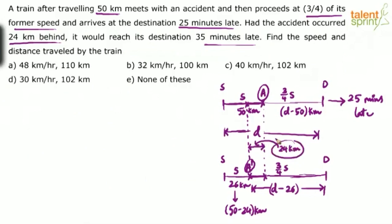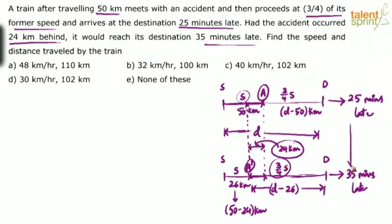In the first case, this 24-kilometer stretch was covered at speed S. In the second case, the same 24 kilometers was covered at three-fourth of S. The overall time difference between the two cases is 10 minutes — 35 minus 25 — and this difference arises entirely because of this additional 24-kilometer stretch being covered at reduced speed.